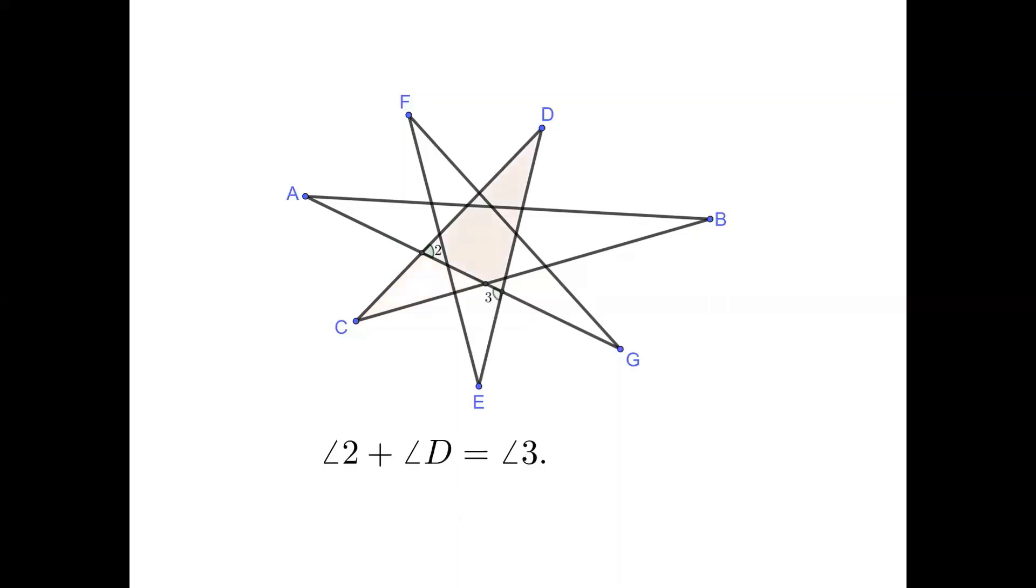Continue on our journey. Look at the triangle having angles 2 and D. Their sum equals the exterior angle 3. And we have angle 3 equals the sum of four angles A, B, C, and D by a substitution.